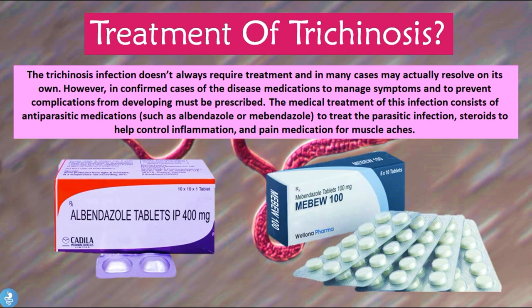Finally, let's talk about the treatment of trichinosis. The infection doesn't always require treatment and in many cases may resolve on its own. However, in confirmed cases, medications to manage symptoms and prevent complications must be prescribed. Medical treatment consists of antiparasitic medications such as albendazole and mebendazole to treat the parasitic infection, steroids to help control inflammation, and pain medication for muscle aches.